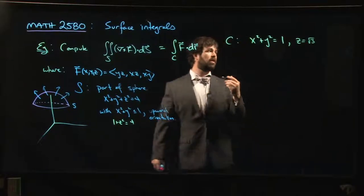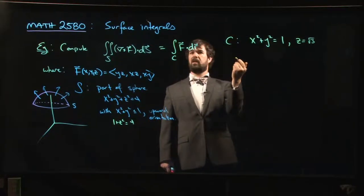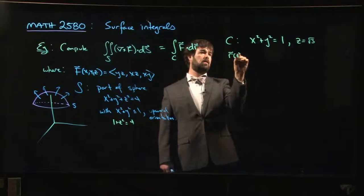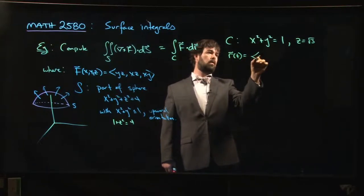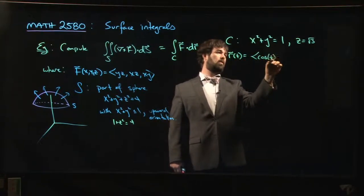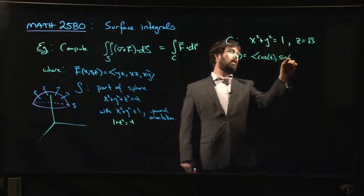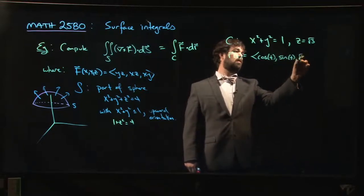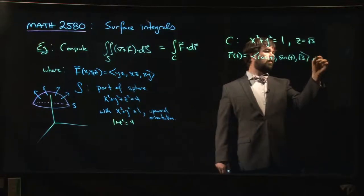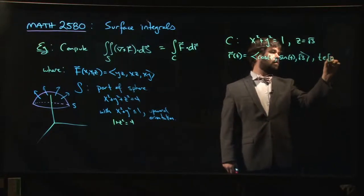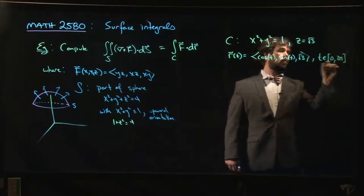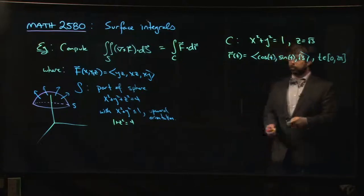And so that means an obvious parametrization to take here would be to take R of t to be cosine t, sine t, root 3, with t running from 0 to 2π.